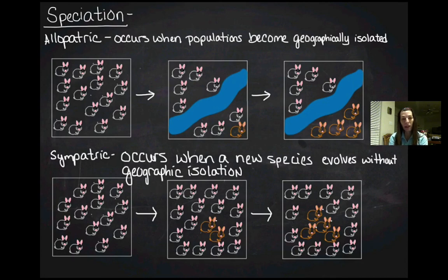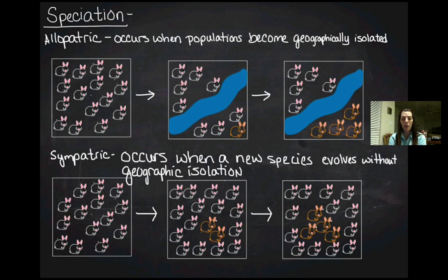Those are the two main forms of speciation. We are going to talk about the ways we can categorize reproductive isolation beyond geographic barriers and courtship ritual behavior — we'll cover that in class. If you have any questions, come see me or send me an email.